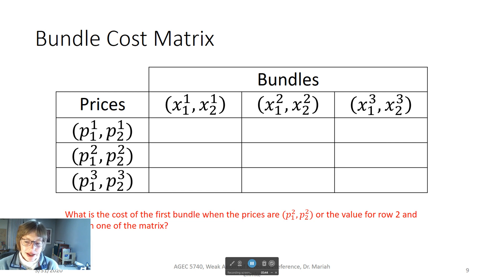Think about what is the cost in row 2 and column 1 of the matrix. That would be row 2, column 1, right over here. Did you come up with 4? That would be 2 times 1 plus 1 times 2.